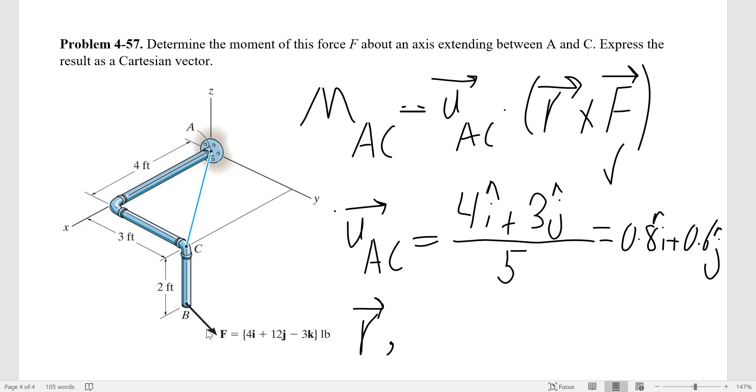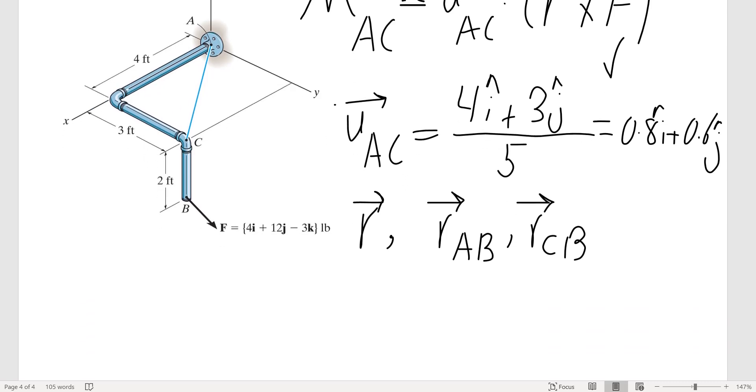We don't have any other point, so our option is RAB or RCB. Here I'm going to find RAB.